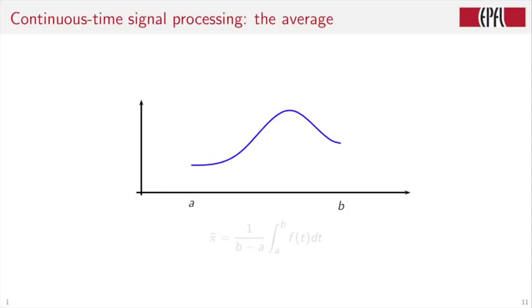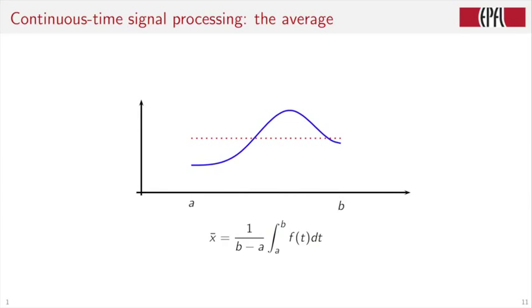It is time to do some very simple continuous time signal processing. We have a function in blue here between a and b, and we would like to compute its average. As is well known, this will be the integral of the function divided by the length of the interval, and it is shown here in red dots. What would be the equivalent in discrete time signal processing? We have a set of samples between zero and capital N minus one. The average is simply one over N, the sum of the individual terms, xN, between zero and capital N minus one. Again, it is shown in the red dotted line. In this case, because the signal is very smooth, the continuous time average and the discrete time average are essentially the same.